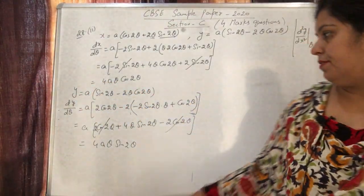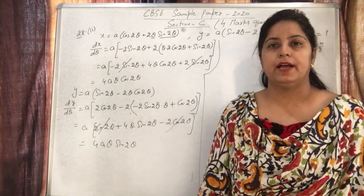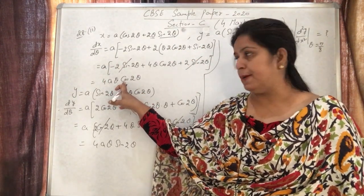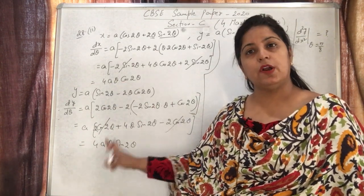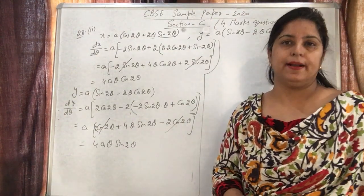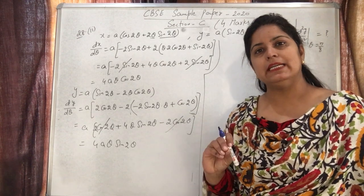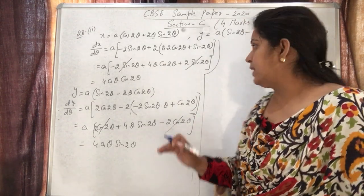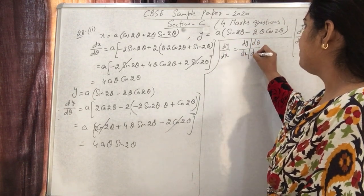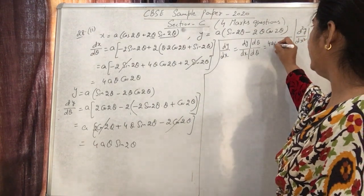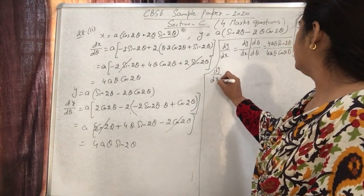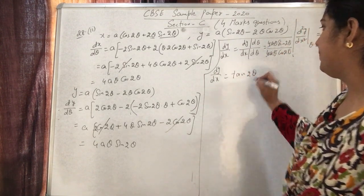A common student mistake here is to differentiate dx/dθ and dy/dθ a second time and then divide — that is wrong and does not give d²y/dx². The correct method: first find the first derivative dy/dx = (dy/dθ)/(dx/dθ) = 4aθsin2θ / 4aθcos2θ = tan2θ.